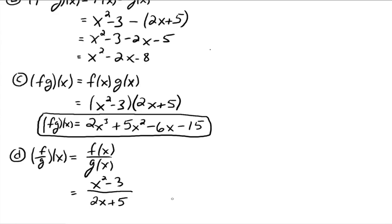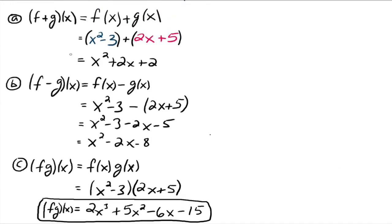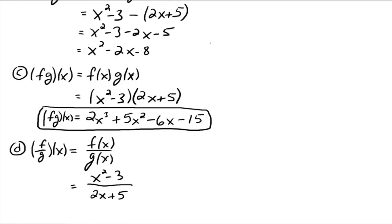On these first three examples, this one up here, f plus g of x is equal to x squared plus 2x plus 2. The domain's all real numbers. For f minus g of x being x squared minus 2x minus 8, again, the domain is all real numbers. You can plug any number you want in it for x and nothing bad happens. Alright. Same with multiplication. You get 2x cubed plus 5x squared minus 6x minus 15. You can plug in any real number you want for x and nothing bad happens. So the domain's all real numbers.